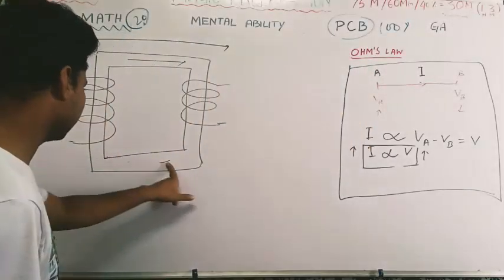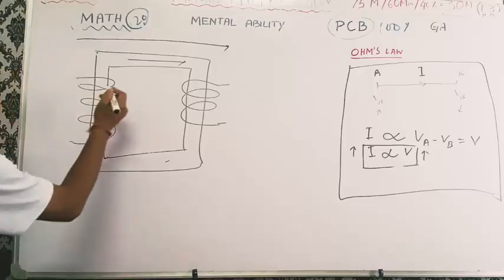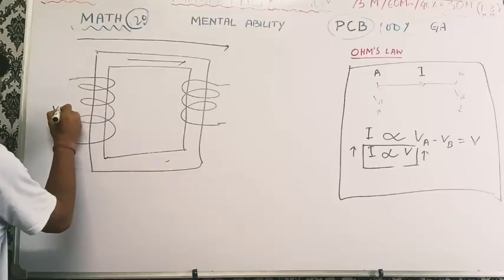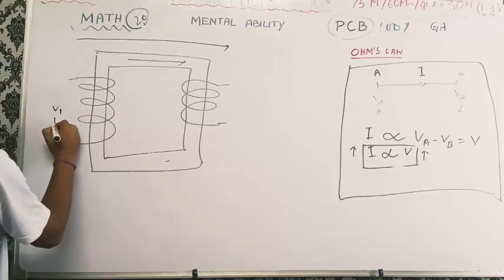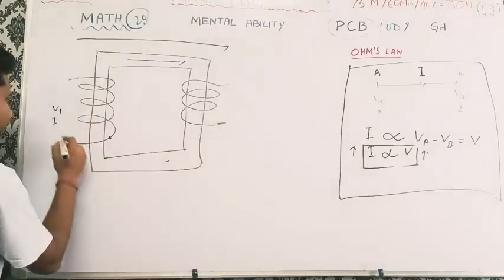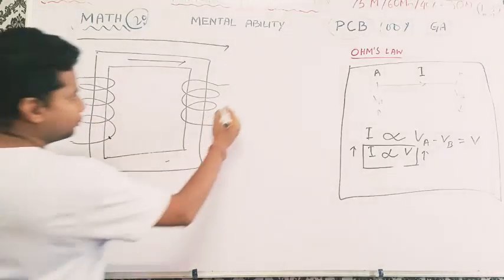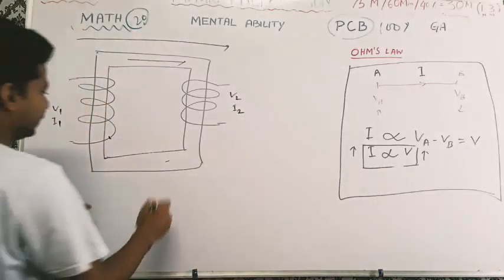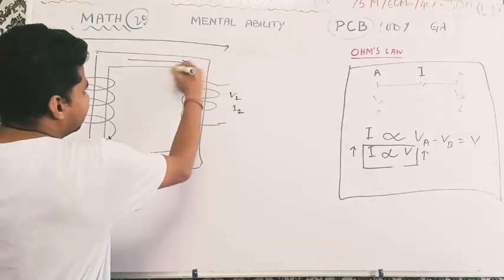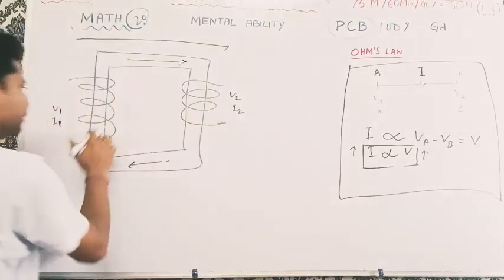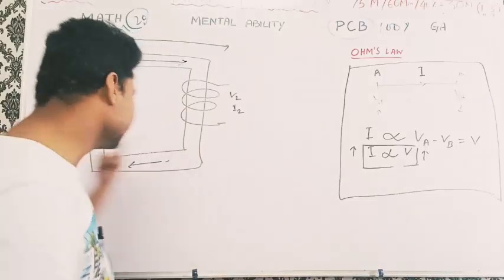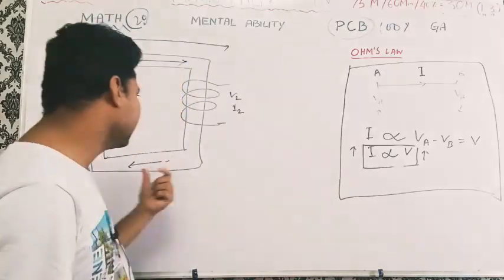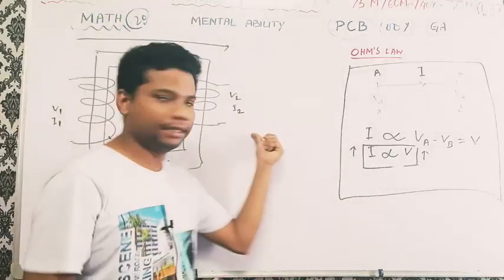This transformer has a primary and secondary winding. This is the primary voltage V1. The current flow is through the winding. The current flow is I2. This is the single conductor and double winding. The current flow is I2, which is the same as I2.